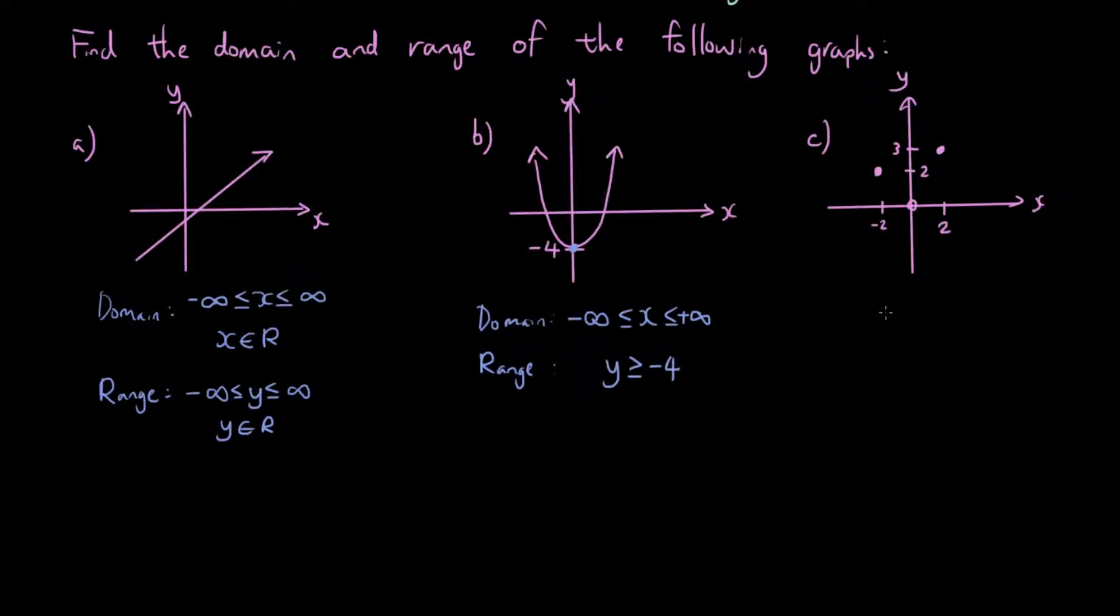Now if you have a look at this third graph, basically the domain is the x coordinates of these two dots. So this dot is negative 2 and this dot has an x coordinate of 2. So that is the domain. And if you have a look at the range, then we look at the possible y values. So the y value of this dot is 2 and the y value of this dot is 3. So that's how you get the domain and the range.